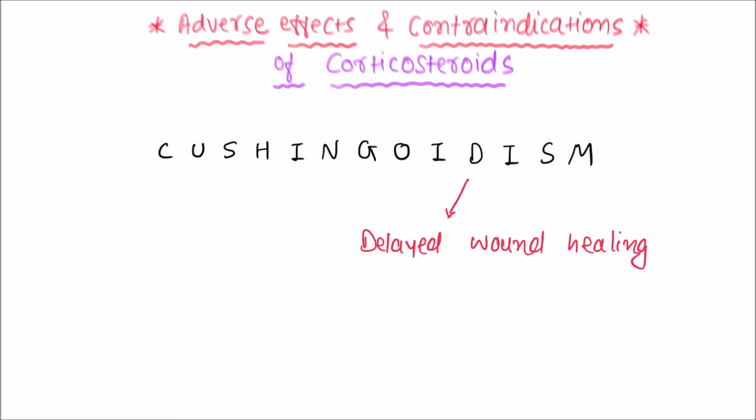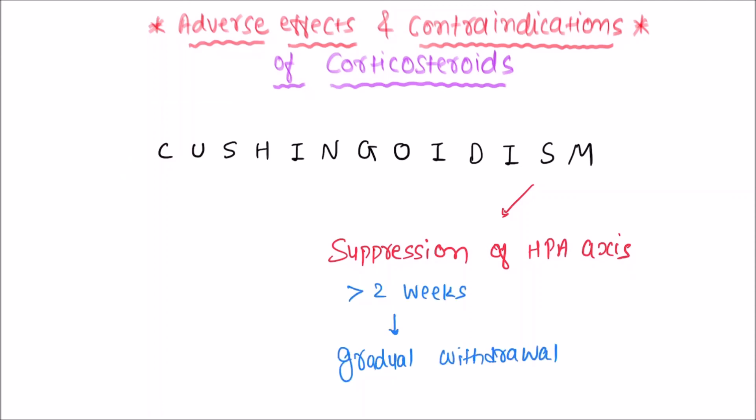D for delayed wound healing and decrease in seizure threshold, so there is one contraindication: epilepsy. From I, insomnia and mental disabilities like features, so they are contraindicated in patients with psychosis. From another S, suppression of hypothalamus pituitary adrenal axis. So if steroids are given for more than two weeks, they should be gradually withdrawn. Alternate day therapy also reduces the chances of suppression of HPA axis.